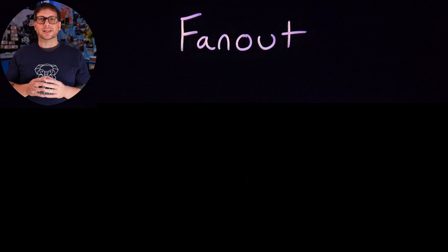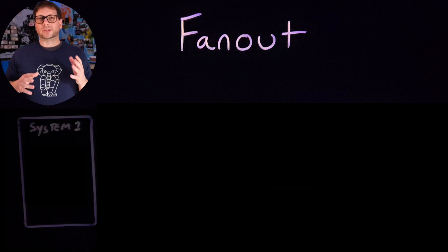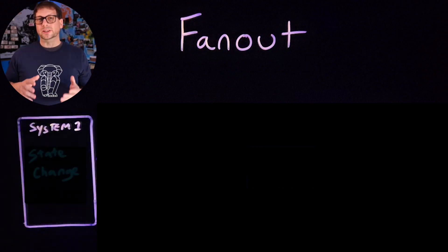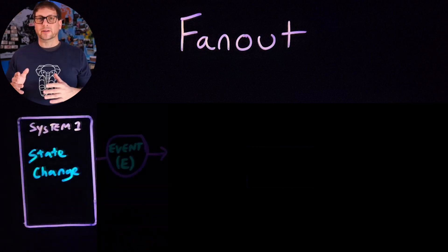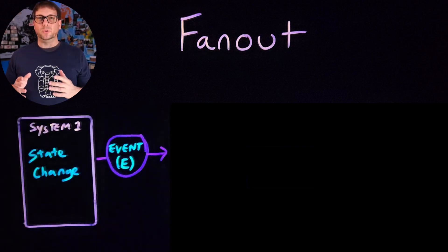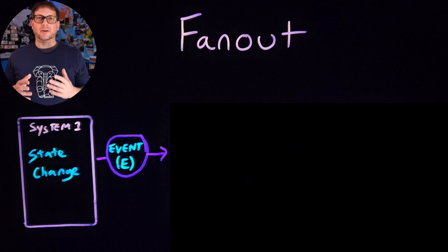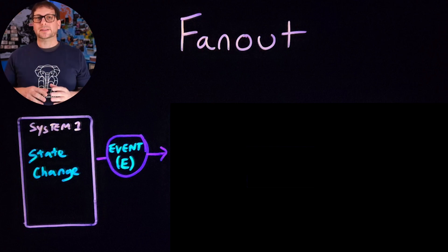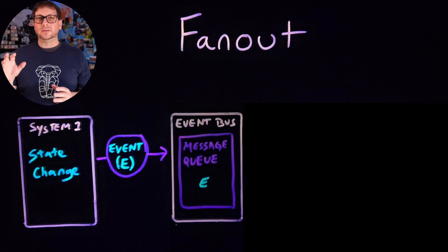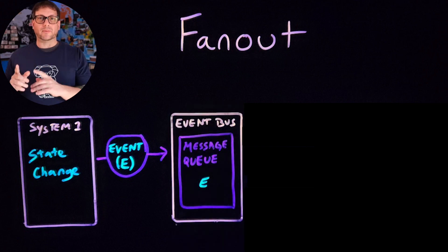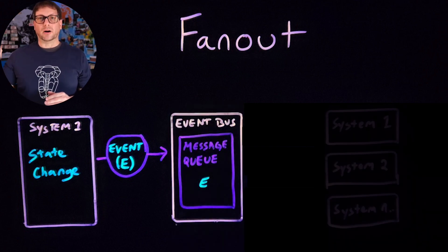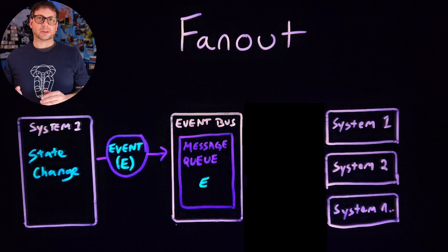Let's take a look and see what it looks like. We'll start with our source system, which is publishing an event in response to a state change, just like we see in a lot of our other event-driven architecture patterns. But in this case, the event is going to a single queue in the event bus, and that queue is being accessed by all of the subscribers.